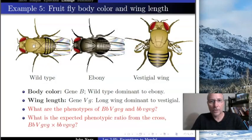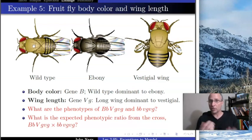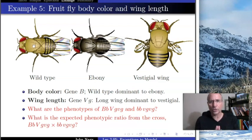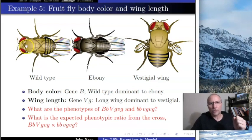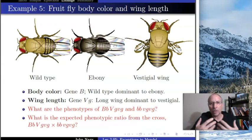Now for the final example of a violation of Mendel's principle. We're seeing various ways in which Mendel's principles are violated, but these are all very simple violations — there are much more complicated ones. This set of examples is based on the fruit fly Drosophila melanogaster, one of the most important creatures in biology because much of what we know about genetics comes from studying these flies.